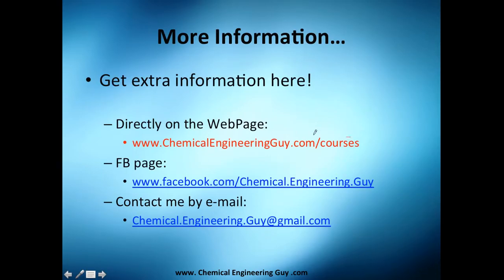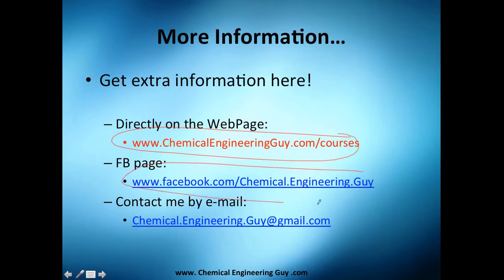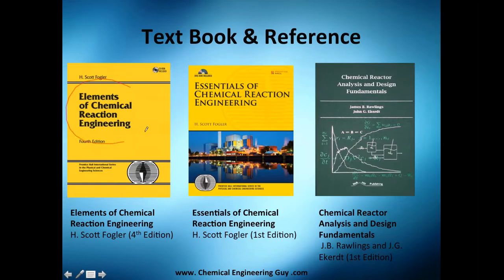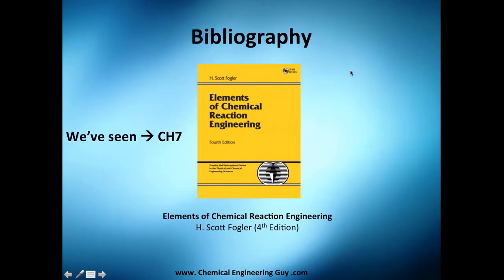For extra information, go to the courses or like my Facebook page — I post extra content, not always academic but generally important information for chemical engineers. You can also contact me by email if you have any specific doubts. For a book reference, we're still studying Elements of Chemical Reaction Engineering — we covered Chapter 7. That's everything, guys — Chapter 7 is done. Thank you for watching.